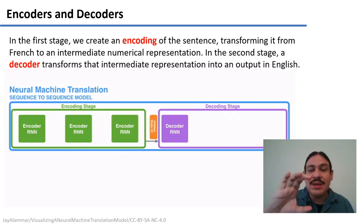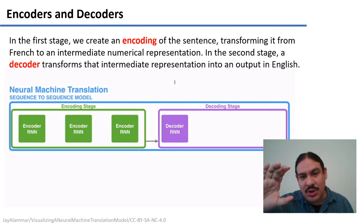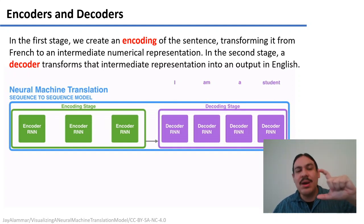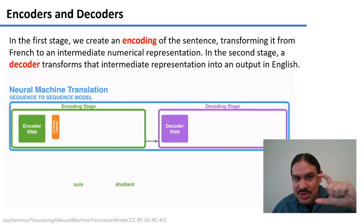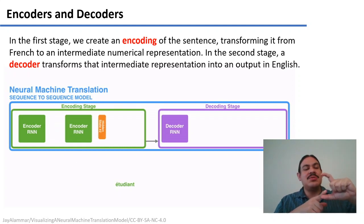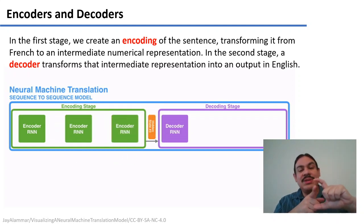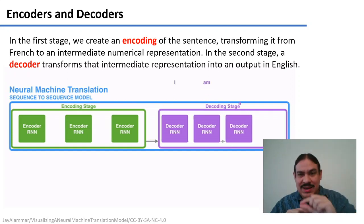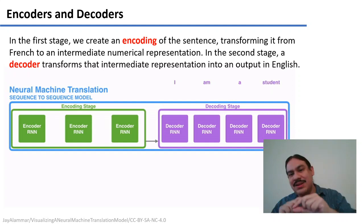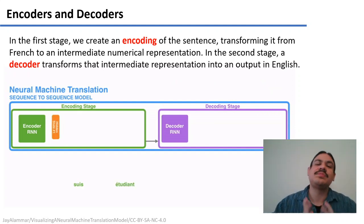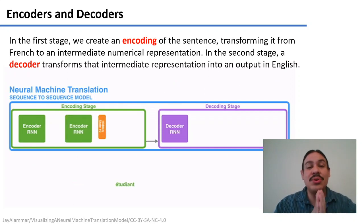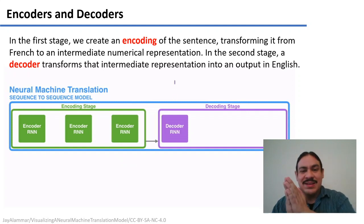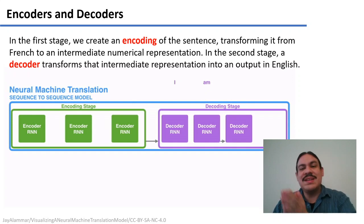This intermediate form — the output of the last recurrent neural network — would contain information about all the words it saw in the encoding stage. This would be one neural network. Then we train a second neural network, the decoder, which takes the hidden state from the recurrent neural network as its input. The recurrent neural network would then generate an output: one word in English, then another word in English, then another word in English, like a sequence. This method is called encoder-decoder — it transforms French into an intermediate stage, and then the second neural network transforms that intermediate stage into English.